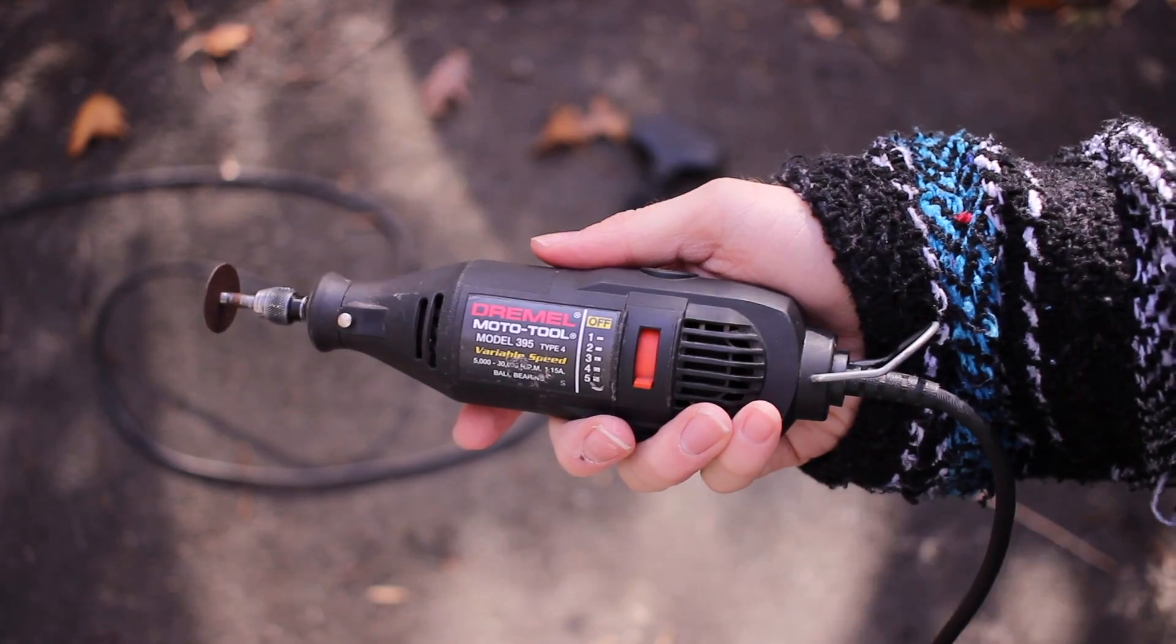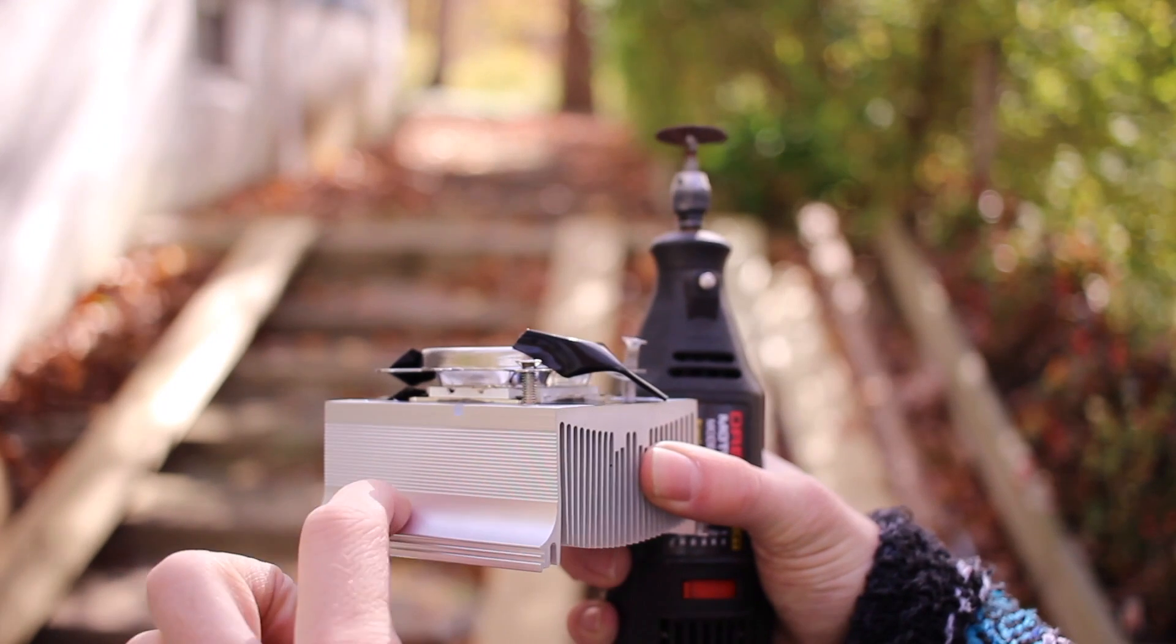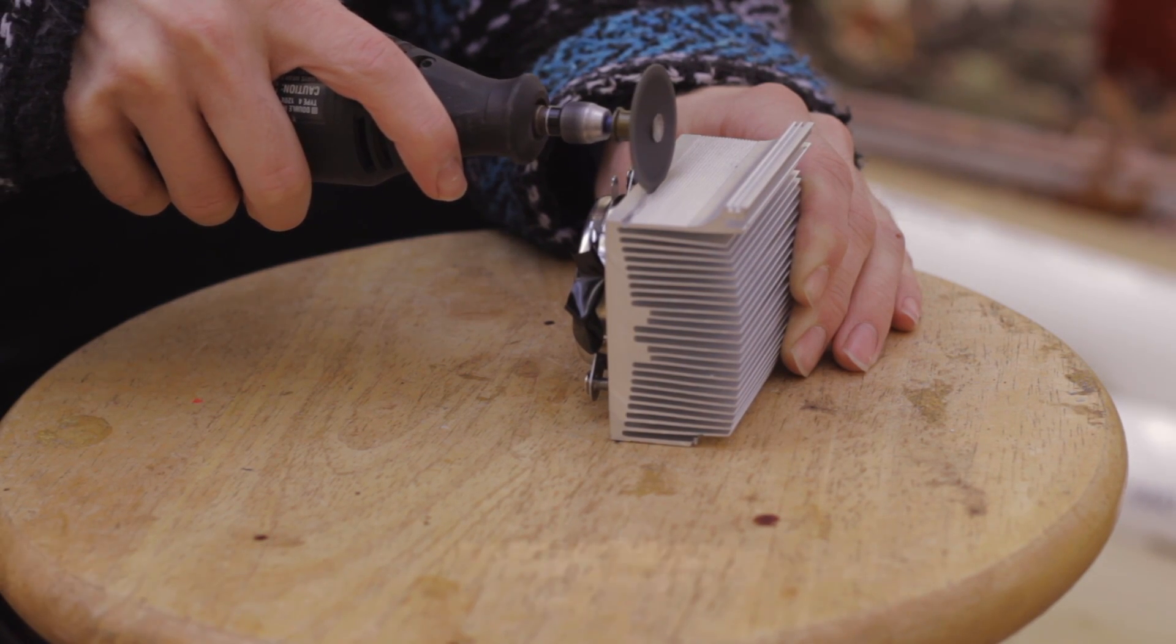Using the Dremel, we're going to cut off the two sides of the heat sink that stick out. This is why we removed the fan earlier because these two sides that stick out was what supported the fan.